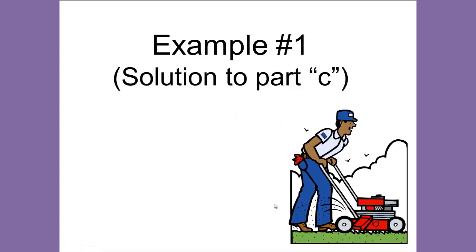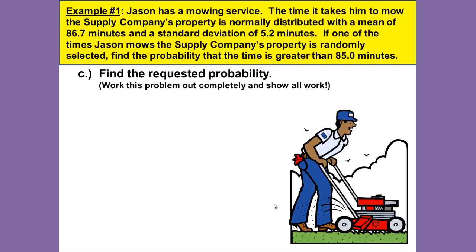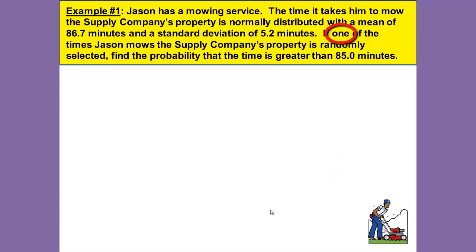Let's go back and look at Part C of Example 1. Jason has a mowing service. The time it takes him to mow the supply company's property is normally distributed with a mean of 86.7 minutes and a standard deviation of 5.2 minutes. If one of the times Jason mows the supply company's property is randomly selected, find the probability that the time is greater than 85 minutes. We determined this is an individual distribution problem because it selects one time.